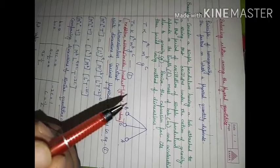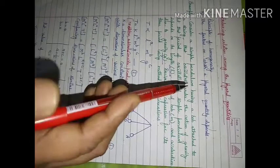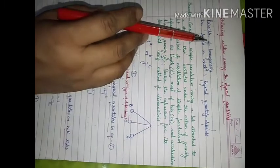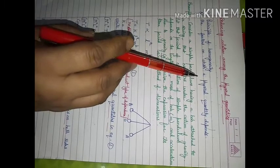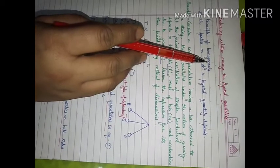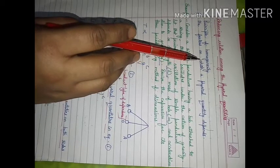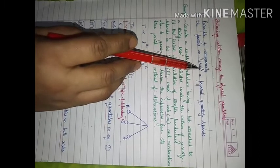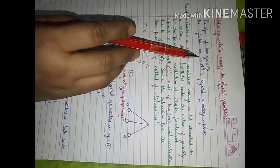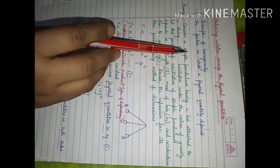Today we will discuss the second application of dimensional analysis: deducing relations among various physical quantities. For this application, we need to keep in mind the principle of homogeneity and the factors on which a physical quantity depends. The principle of homogeneity states that like quantities can be added or subtracted, and if a given equation is dimensionally correct, then each term on either side should have the same dimensions.